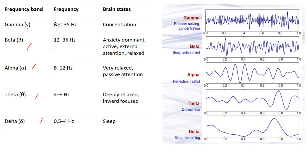For example, gamma waves are more prominent in cases of severe concentration — an extreme concentration state. Alpha waves are prominent during very relaxed or passive attention phases. In deep sleep, we can assess delta waves.